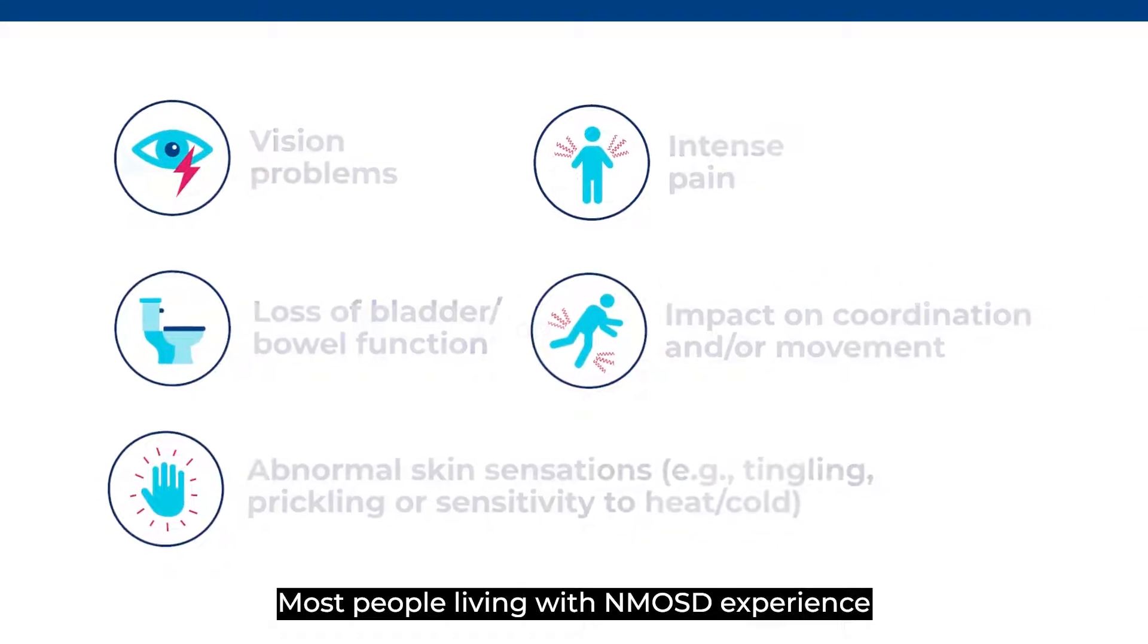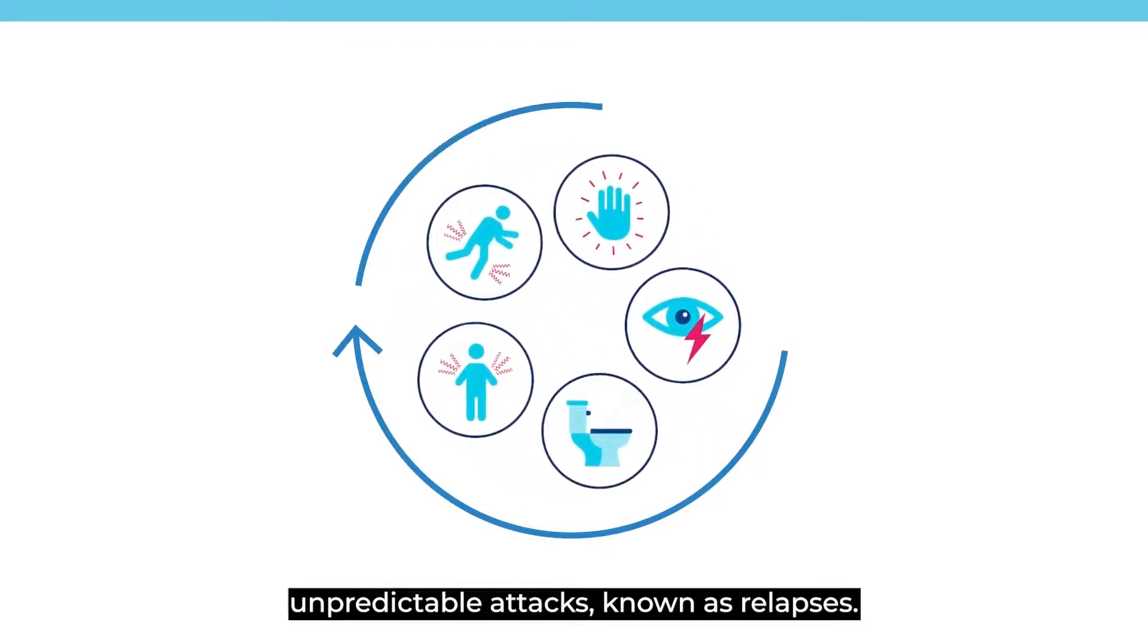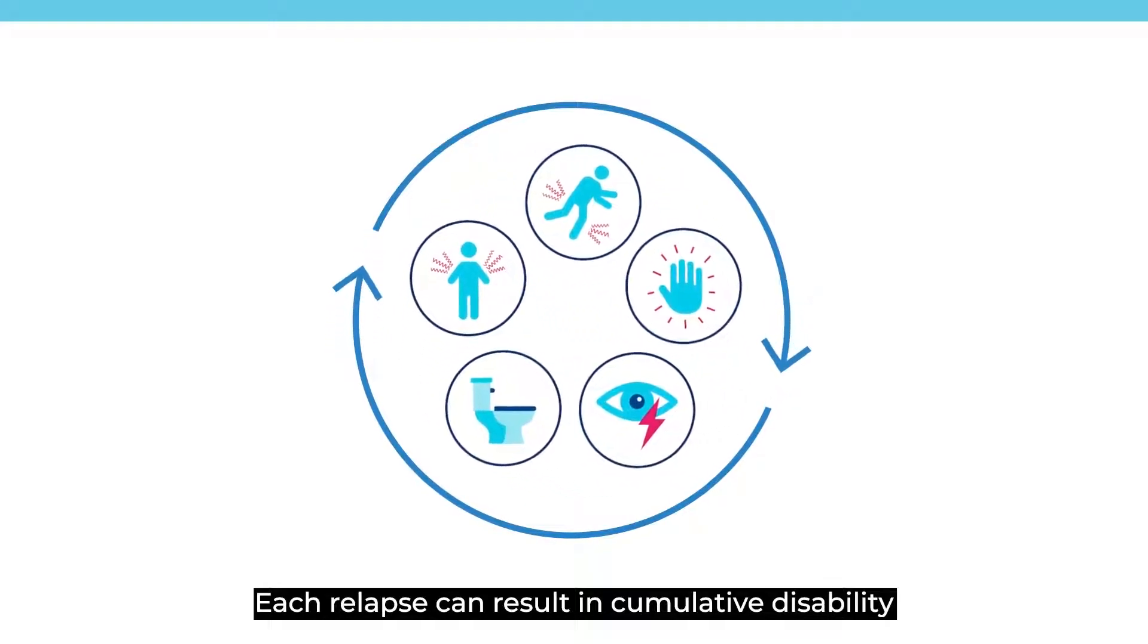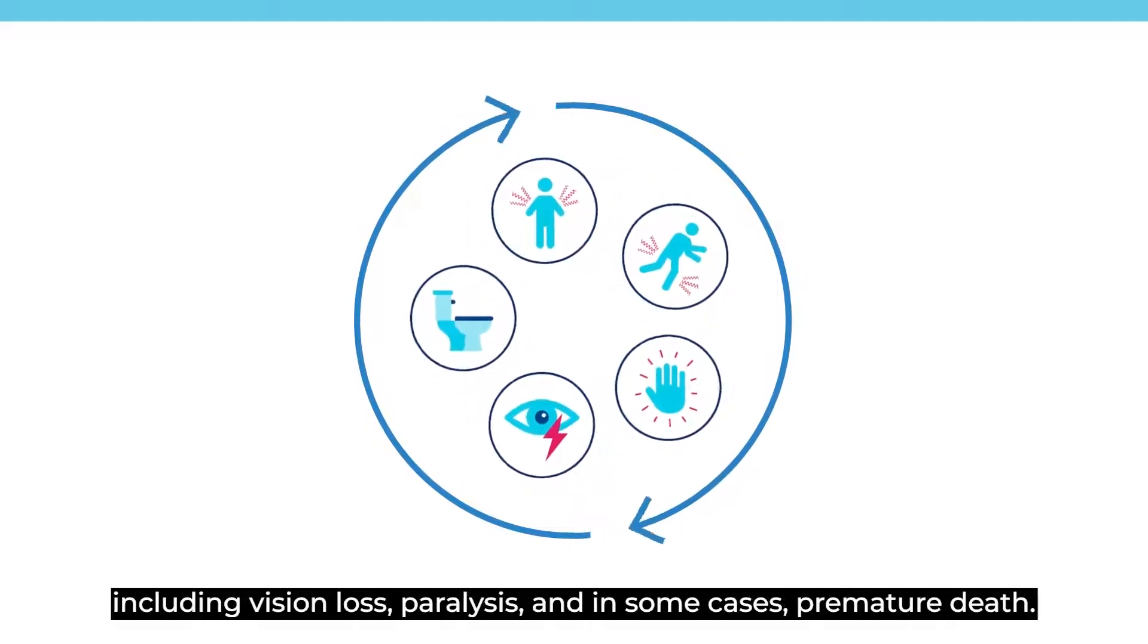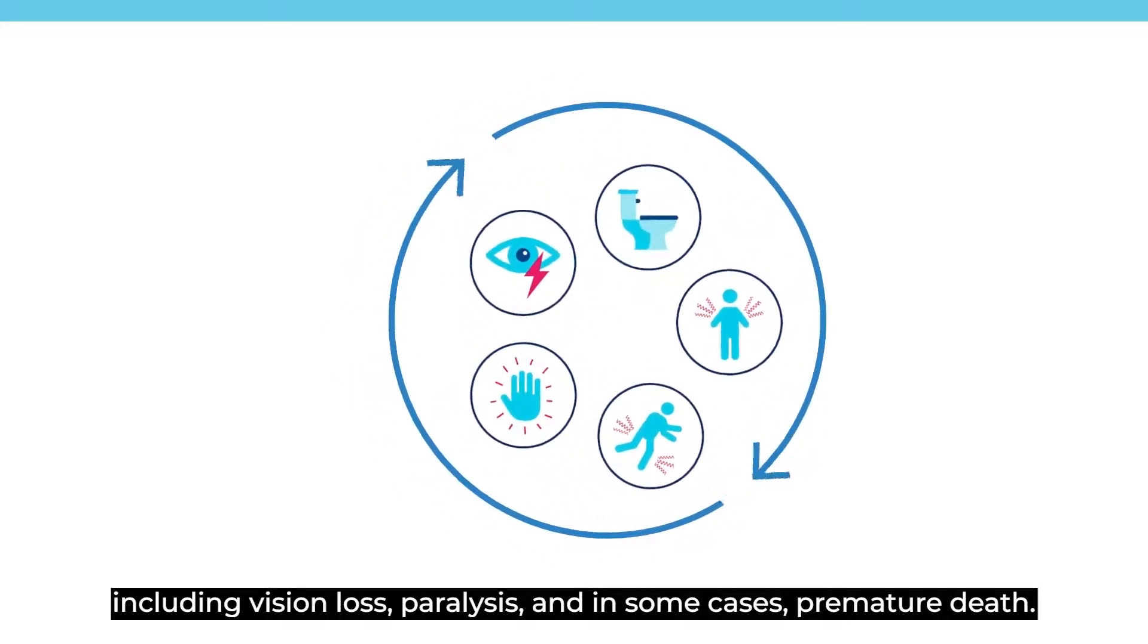Most people living with NMOSD experience unpredictable attacks, known as relapses. Each relapse can result in cumulative disability, including vision loss, paralysis, and in some cases, premature death.